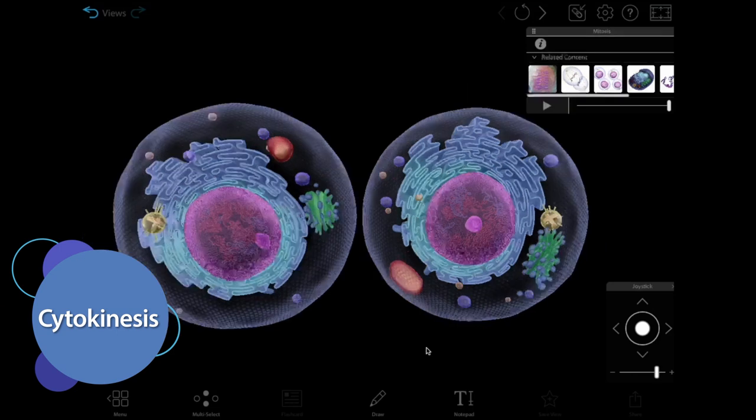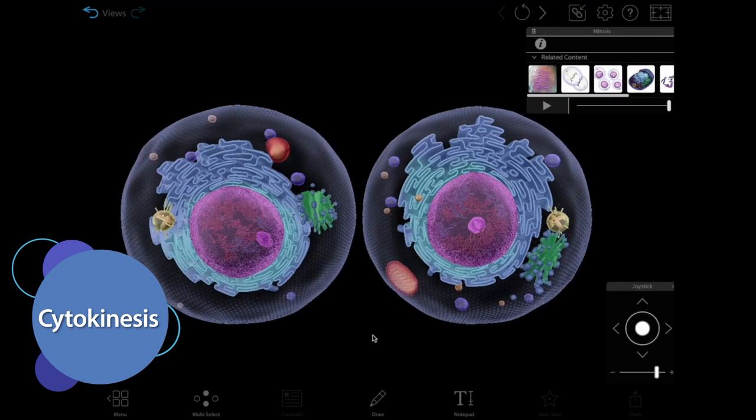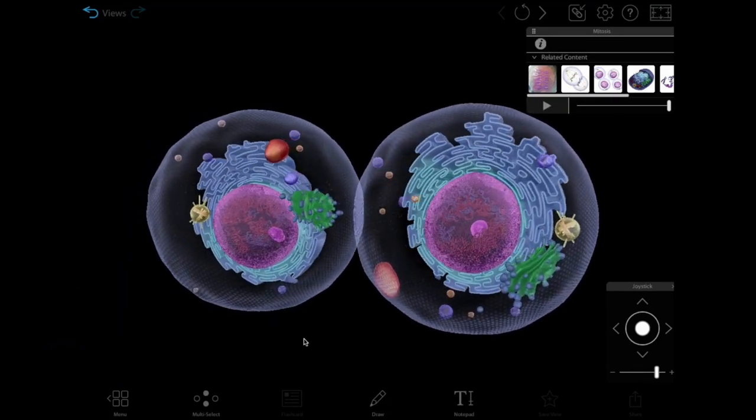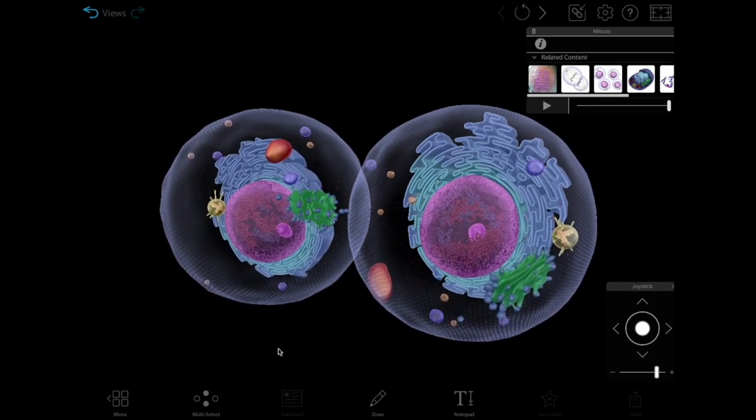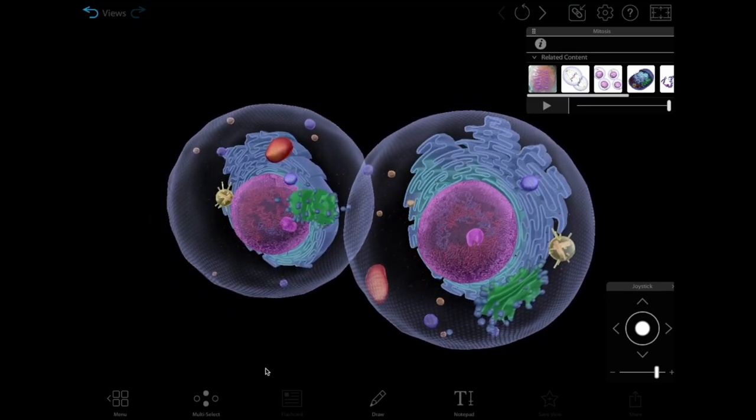Then, the original cell pinches off along the cleavage furrow, forming two new, genetically identical cells. You can see that each of these cells has a full set of chromosomes, as well as all the organelles it needs.